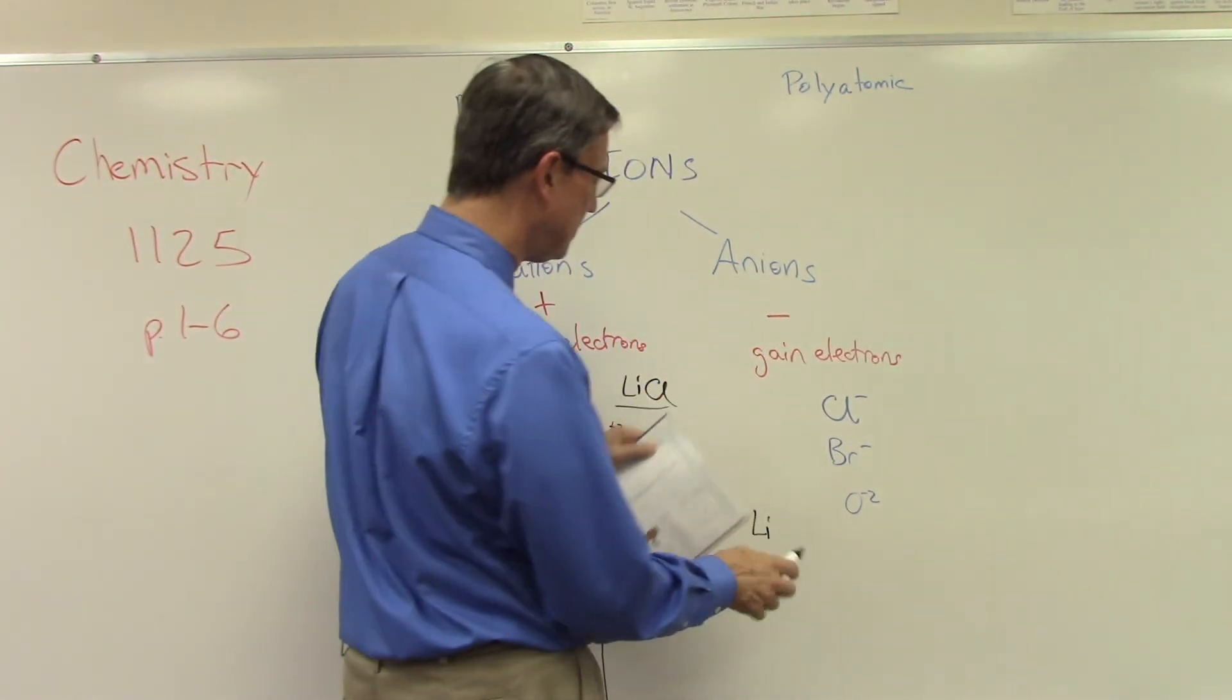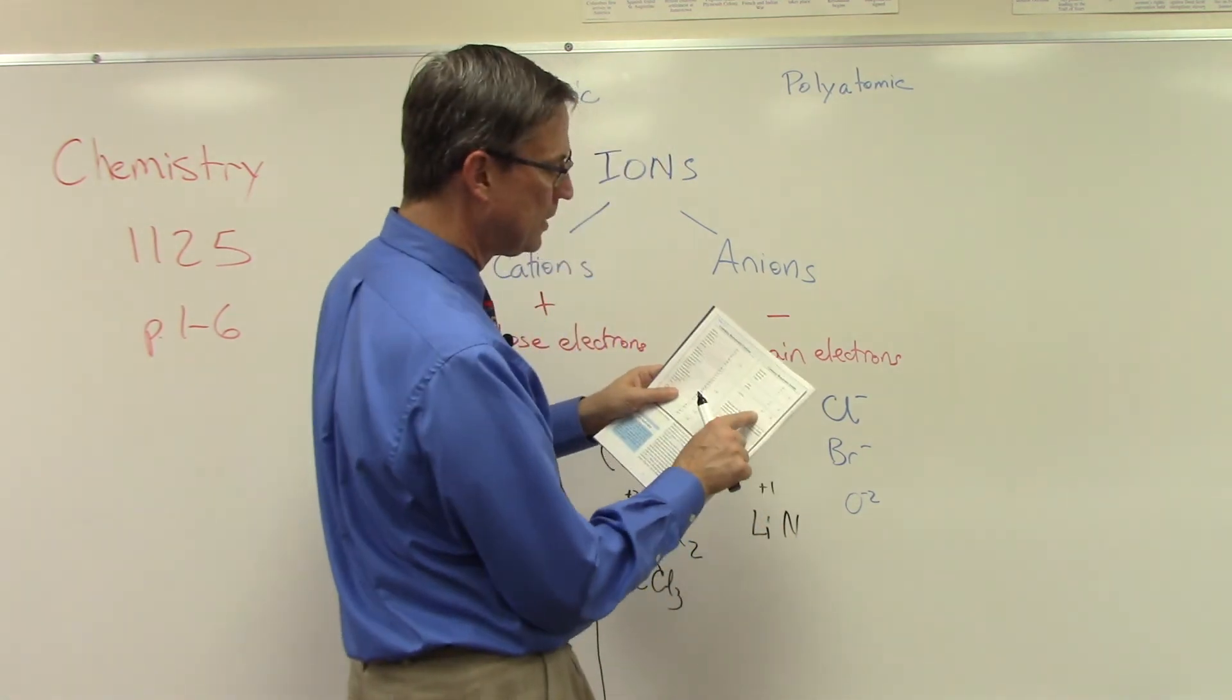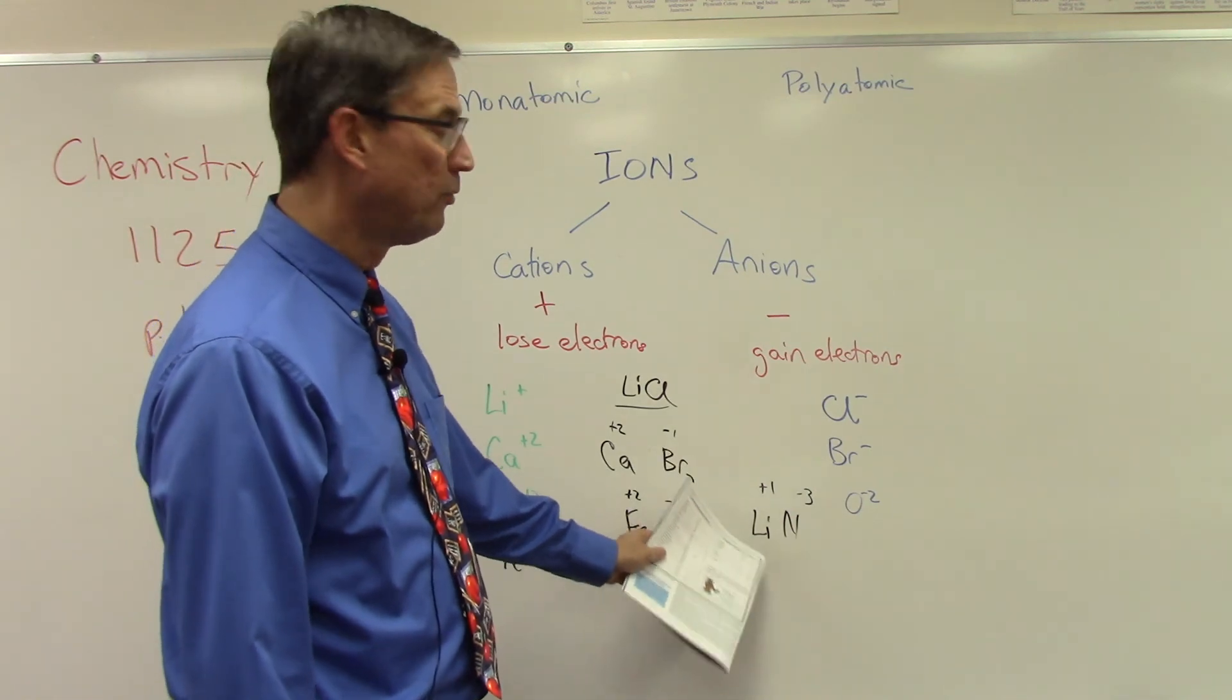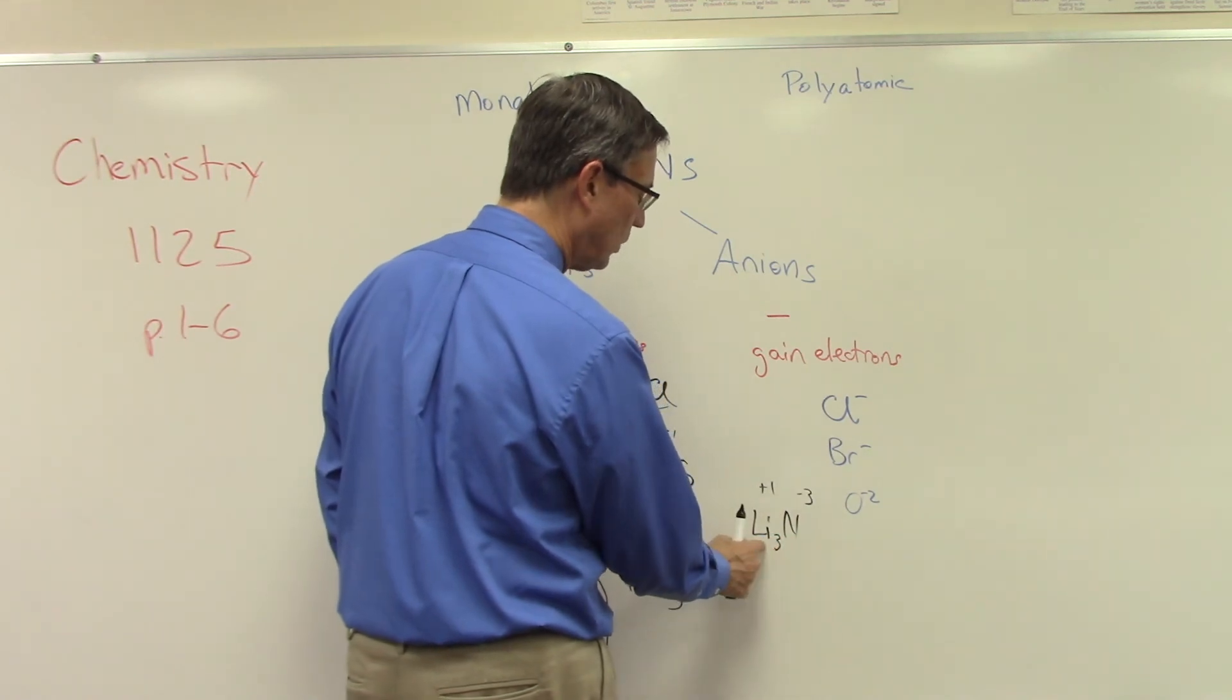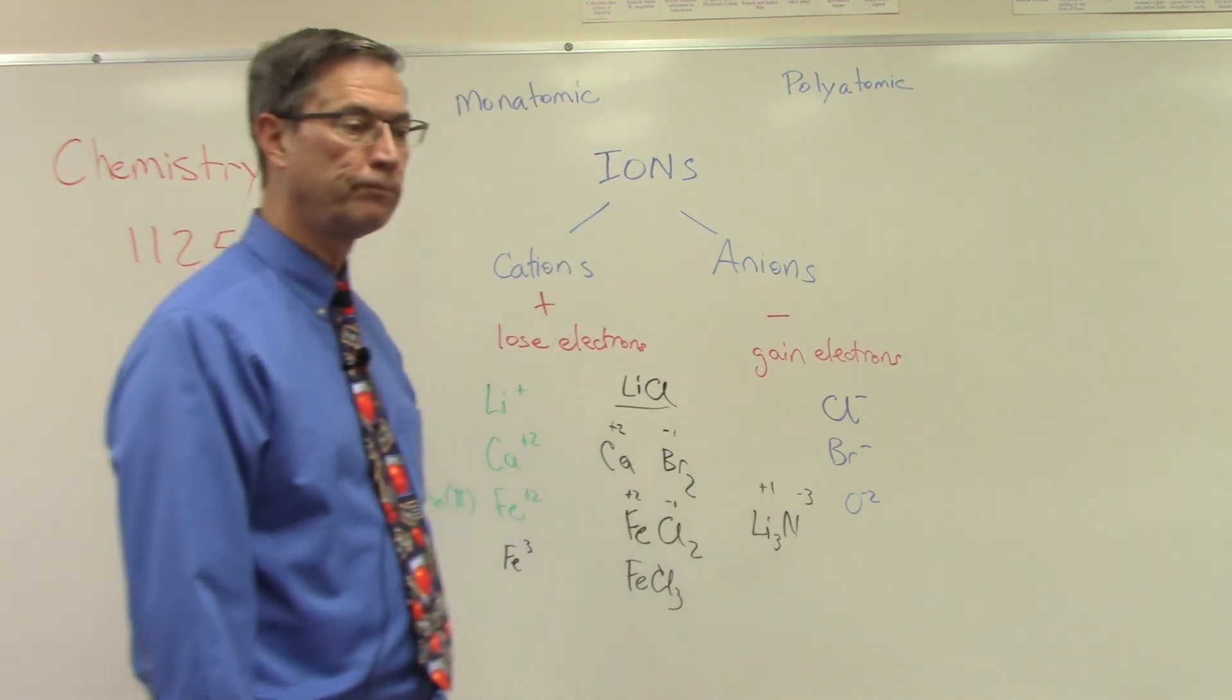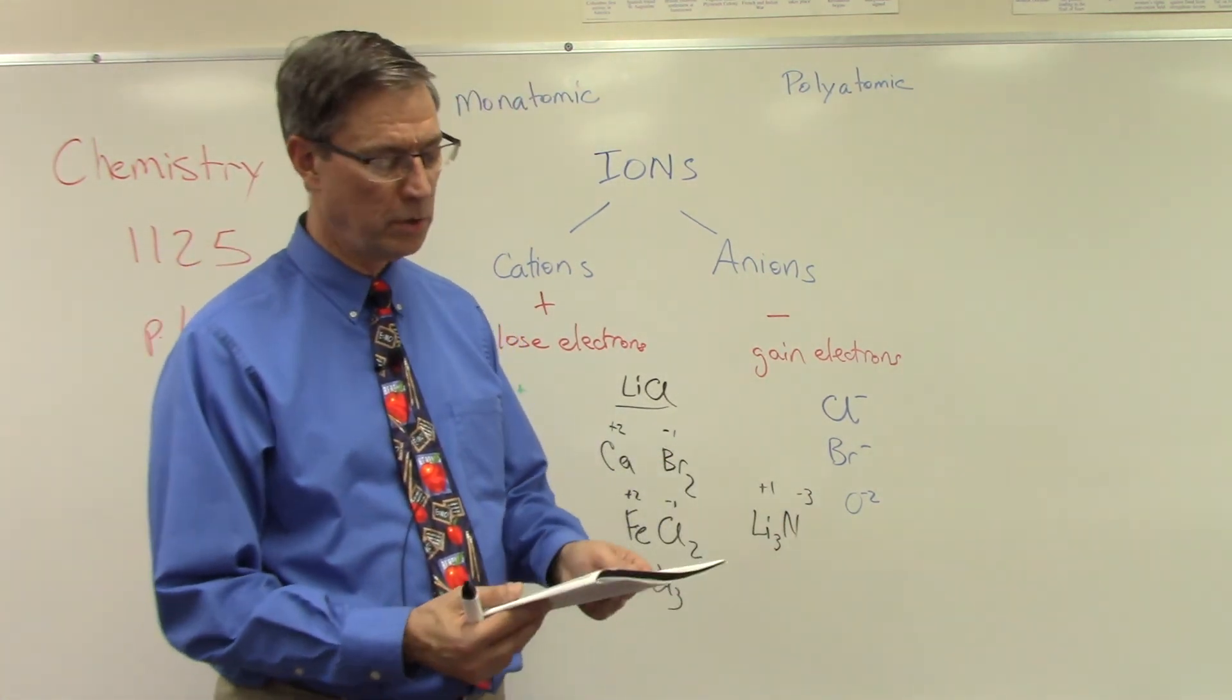All right, so let me try another one here. Let's say I have lithium and nitride, okay. So lithium is positive one, and then the nitride it says is negative three. So in a case like that I actually need three of the lithium to bond with the one nitrogen, so I need a subscript right in the middle there, Li3N. Now the total positive charge balances the total negative charge.